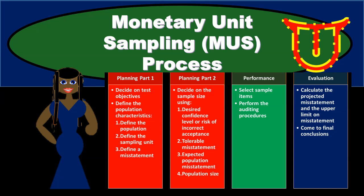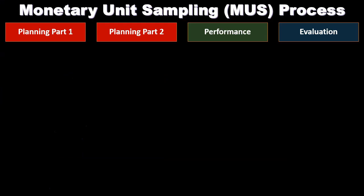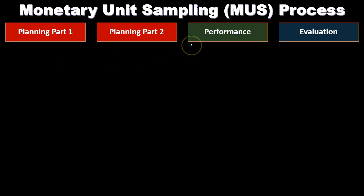In this presentation we will discuss the monetary unit sampling or MUS process. The steps we will go through to apply monetary unit sampling are broken into three categories: planning, performance, and evaluation.